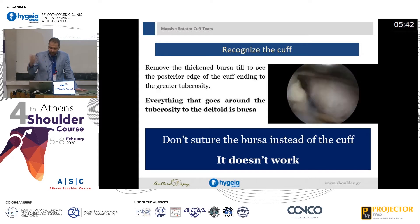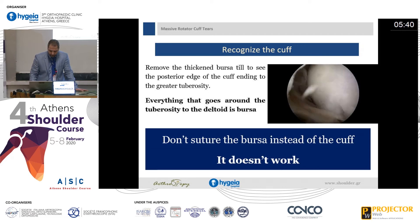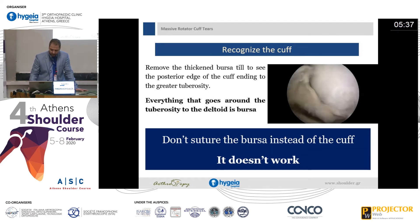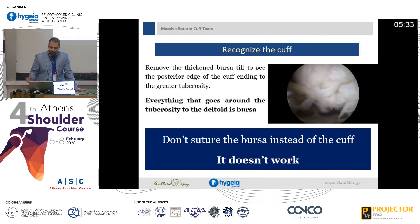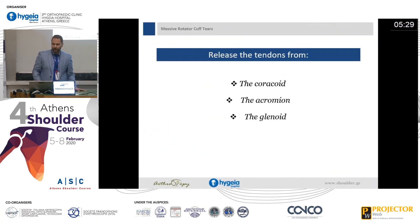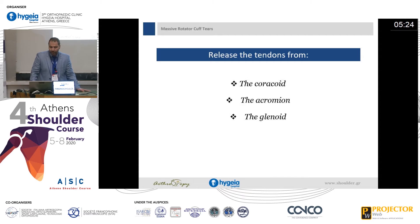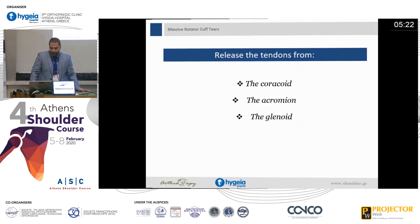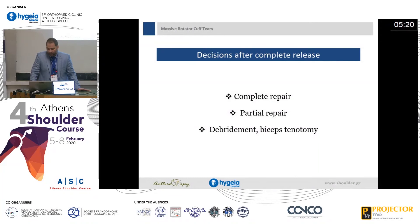We take out the bursa. The releases of the tendons are from the coracoid, the acromion, and the glenoid. Then we have to decide what to do: complete repair, partial repair, or just simple debridement and biceps tenotomy.